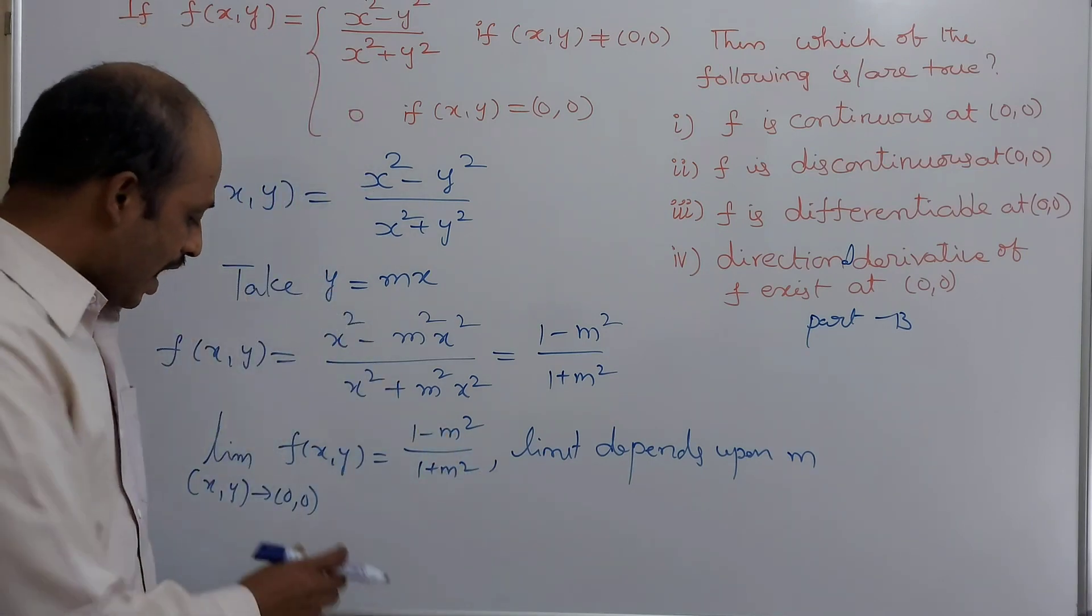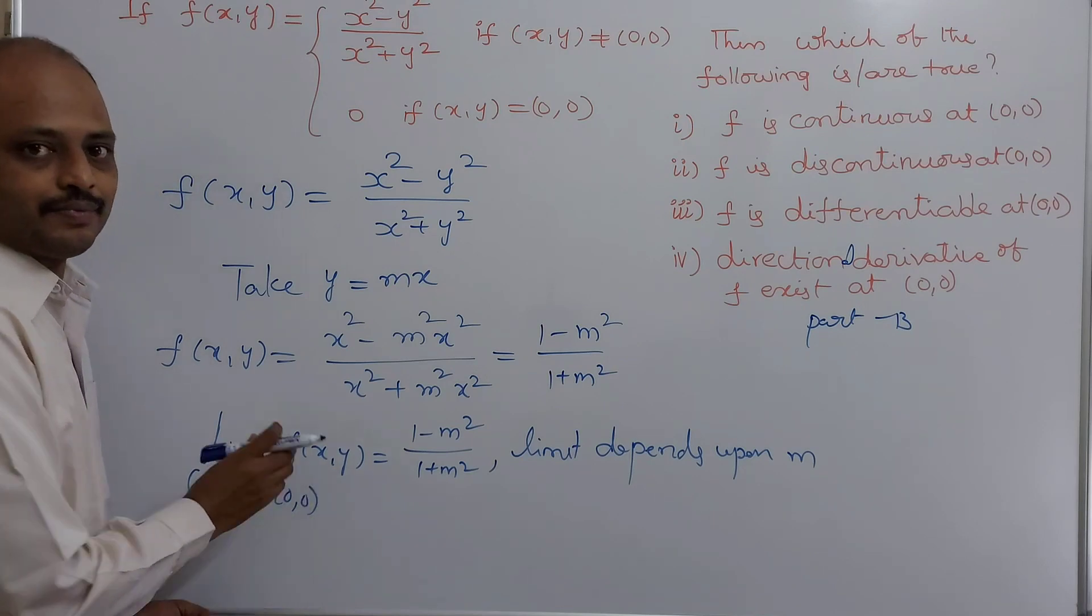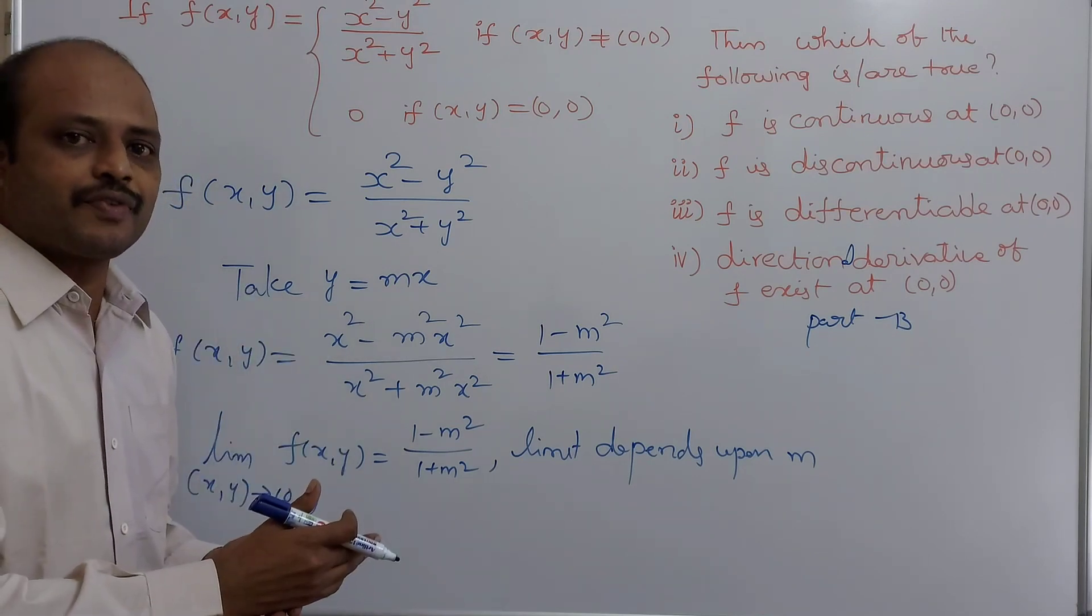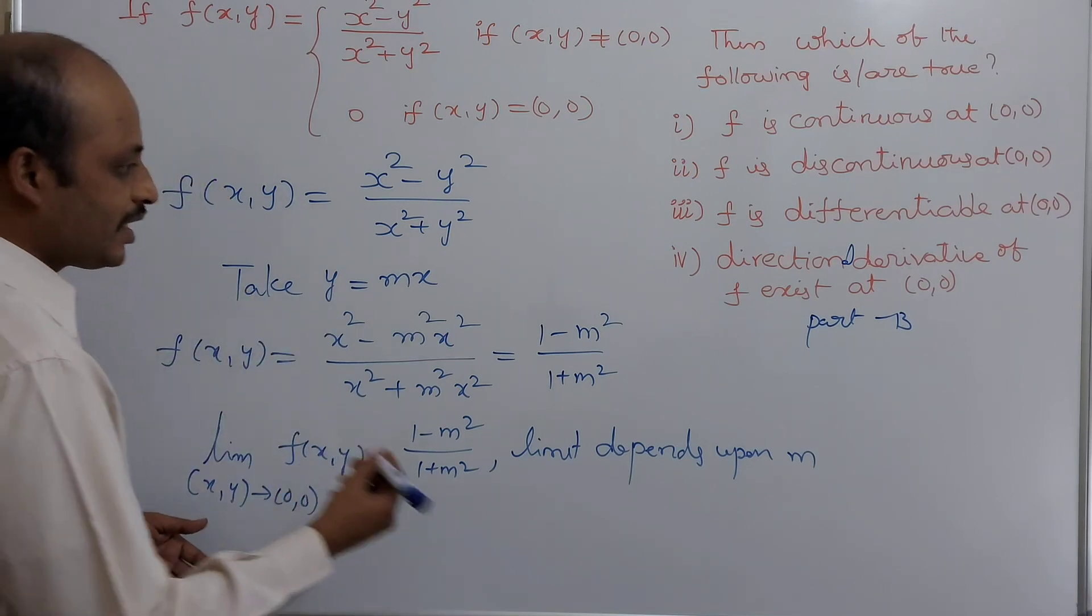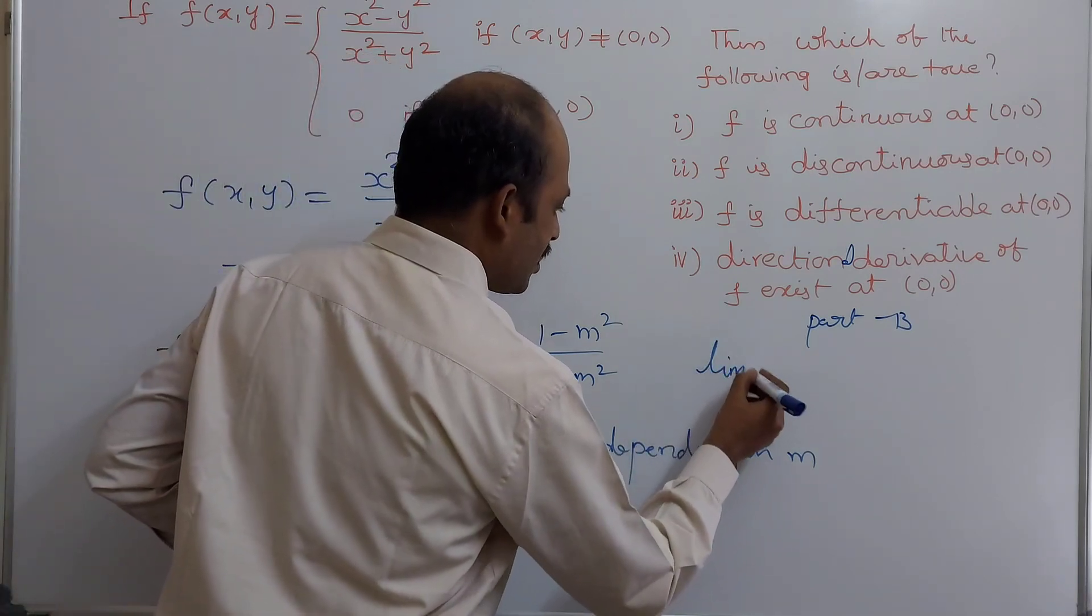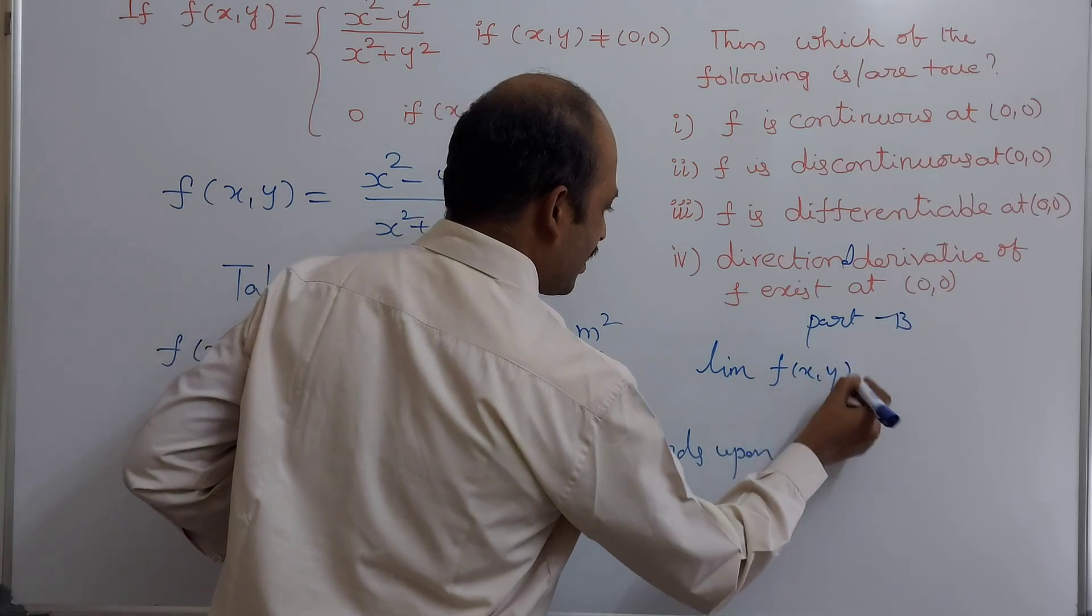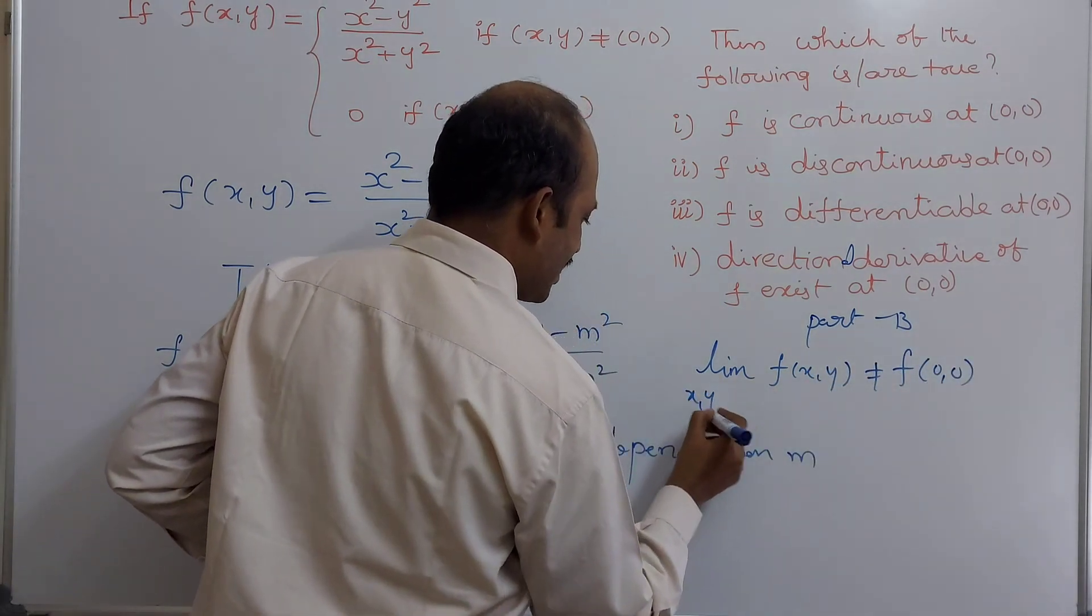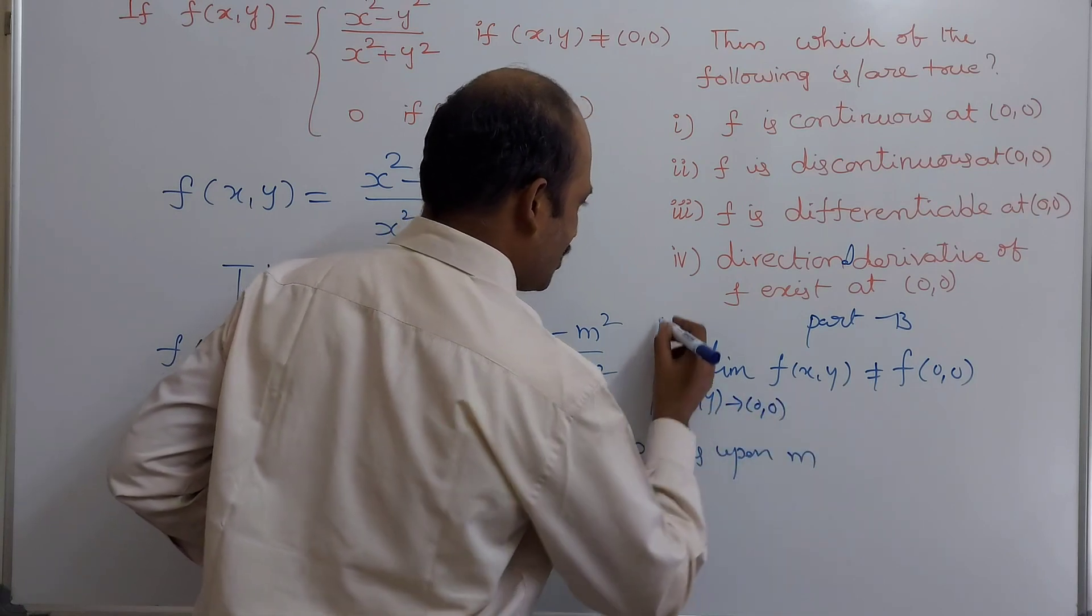It means for different values of m, you get different limits at the point (0,0). At the same point (0,0) for different values of m, you get different values. It means limit f(x,y) not equals to f(0,0) at (x,y) tends to (0,0). This is the condition.